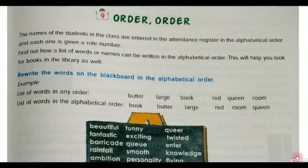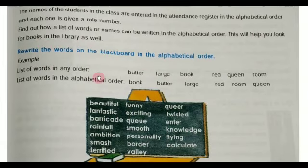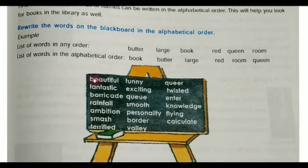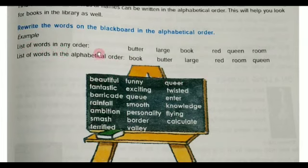Find out how a list of words or names can be written in alphabetical order. This will help you look for books in the library as well. Here some words are given — rewrite the words on the blackboard in the alphabetical order. Here is an example: a list of words in any order, and these are not arranged in alphabetical order.